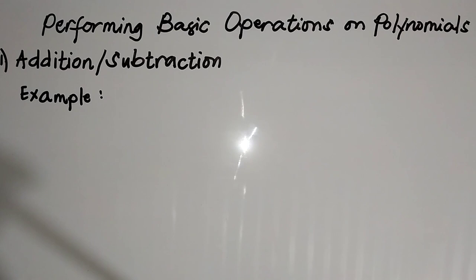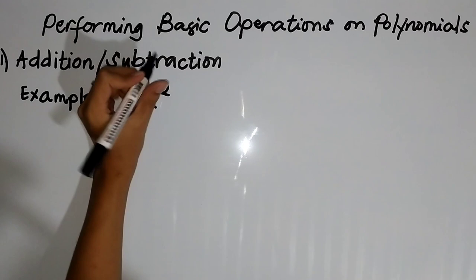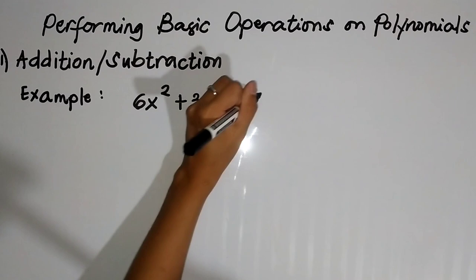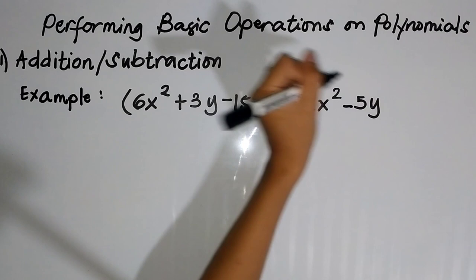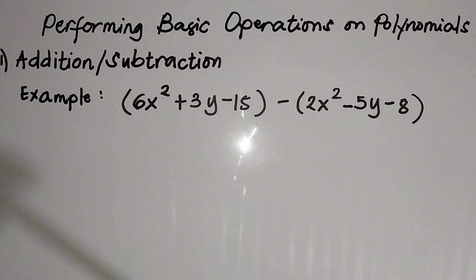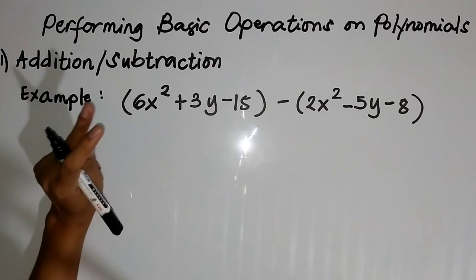Let's proceed to subtraction. When the operation is subtraction, suppose we have the problem 6x squared plus 3y minus 15, and then we will subtract 2x squared minus 5y minus 8.